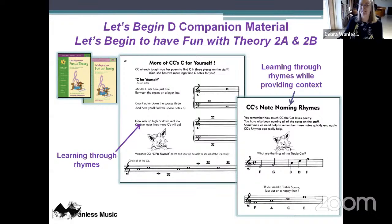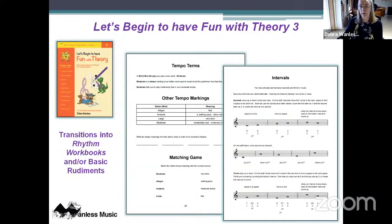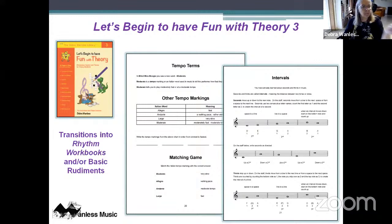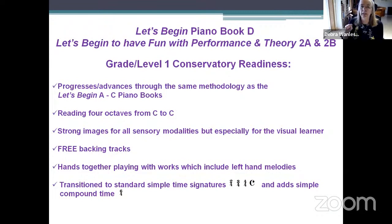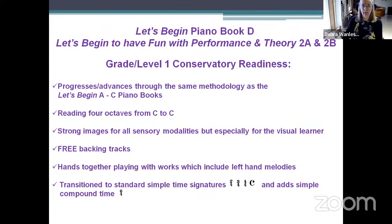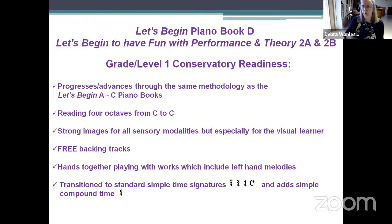For treble spaces: 'if you need a treble space, just put on a happy face — F, A, C, E.' Those cues stay with students for life and make reading much easier. There's also a theory fun book three. When students finish the 'Let's Begin' series, they are essentially Conservatory Grade One level — they're reading four octaves, using strong sensory modalities, playing with backing tracks for rhythm memory and harmonization, playing hands together including left hand melodies, and they've transitioned time signatures to include common time and 6/4.